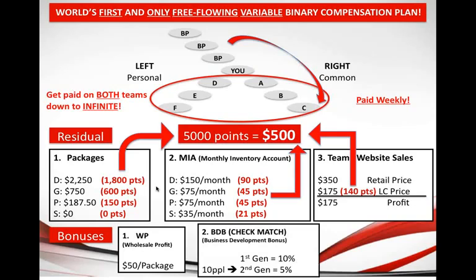The second bonus is called the BDB — the Business Development Bonus — which is also a check match. You get a check match for the people you personally help get started in the business. As a diamond member you will make ten percent of the checks of the people you personally introduce. For example, if you introduce person A and person A makes ten thousand dollars next week, you would get ten percent — that's a one thousand dollar bonus — just because you helped person A make money.